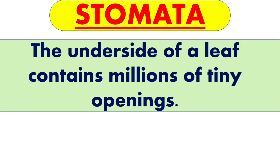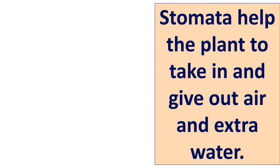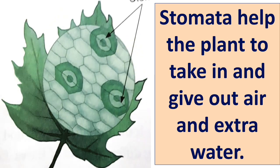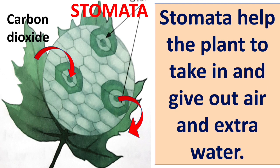Next is stomata. The underside of a leaf, or the lower side of a leaf, contains millions of tiny openings, and these tiny openings are called stomata. Now take a leaf and put it under a microscope. What you will notice is tiny pores — that is stomata. The plant takes in carbon dioxide from the air and gives out oxygen and extra water through these stomata.